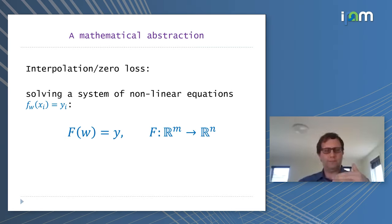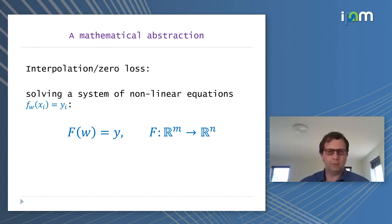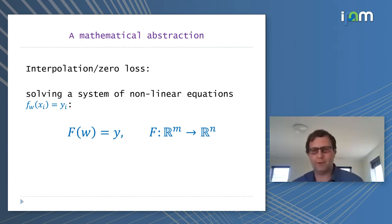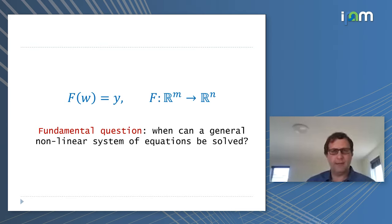Putting this system of equations together, we see this is simply a big system of non-linear equations F(W) = Y, where F is a function from R^M to R^N. A fundamental question associated with that is: when can a general non-linear system of equations be solved?